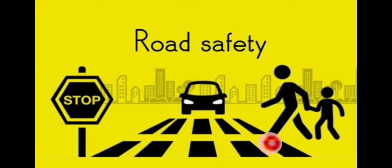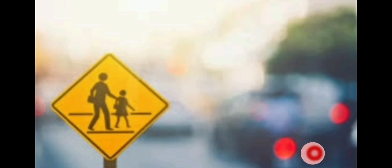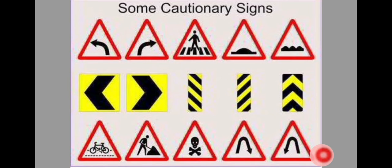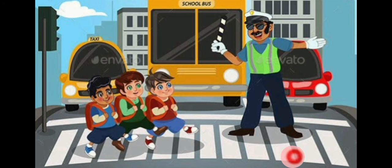The next topic is road safety. Children, have you ever seen this kind of symbol when you go out? You would have seen many of these symbols on the side of roads. They are cautionary signs. Here are some safety rules that we should follow on the road.